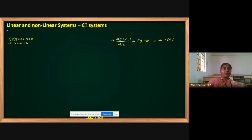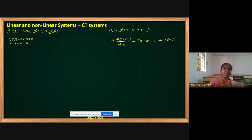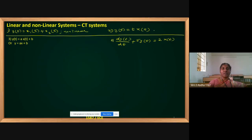In continuous time, two problems we have done before internals. We already completed y of t equal to x1 of t plus x2 of t — this is one problem — and the second problem: y of t equal to t into x of t. We have already checked the solution of these two problems. The first one is a non-linear system and the second one is a linear system.